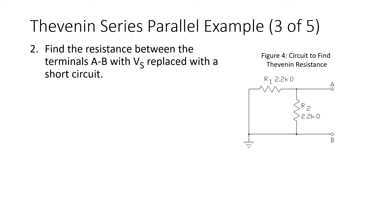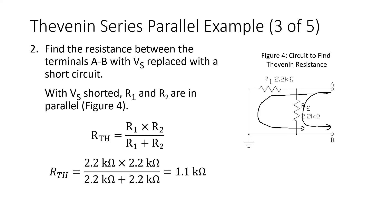Step 2 is to find the resistance between terminals A and B with V_source replaced by a short circuit. Looking at the circuit, to get from A to B I can take two paths, so R1 and R2 are in parallel with respect to terminals A and B. The Thevenin resistance equals the parallel resistance of R1 and R2, calculated using the product-over-sum formula: R1 times R2 divided by R1 plus R2, giving a value of 1.1 kΩ.